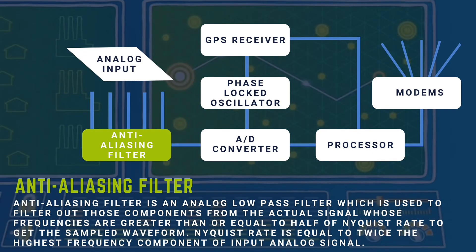Anti-aliasing filter: An anti-aliasing filter is an analog low-pass filter used to filter out signal components whose frequencies are greater than or equal to half the Nyquist rate to get the sampled waveform. The Nyquist rate is equal to twice the highest frequency component of the input analog signal. If anti-aliasing filters are not used, error will be introduced in the estimated phasor.